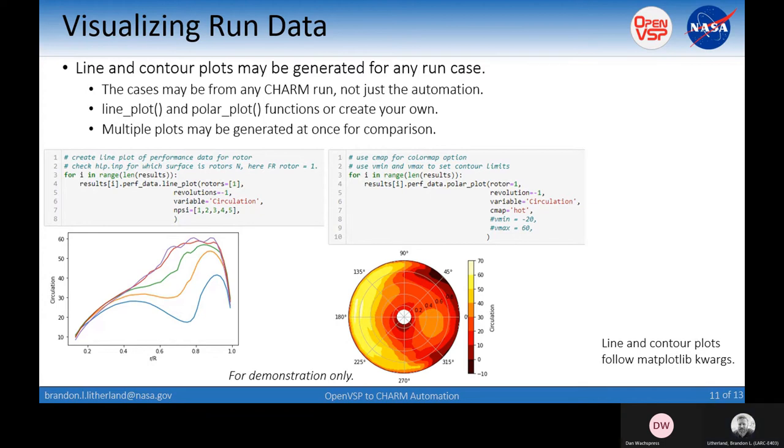A word on visualizing the run data. The line and contour plots are generated for any run case. You don't need a license to do this, you just need the data. The line plot and the polar plot functions are there, or you're welcome to import and create your own. Multiple plots are generated for comparison. An example here on the left, you've got circulation along the blade span. Because these line and contour plots are basically matplotlib, you can change the keyword arguments, change the colors, the ranges.